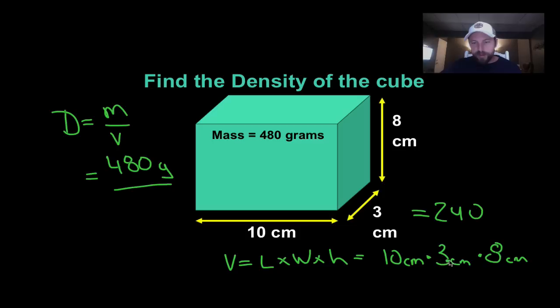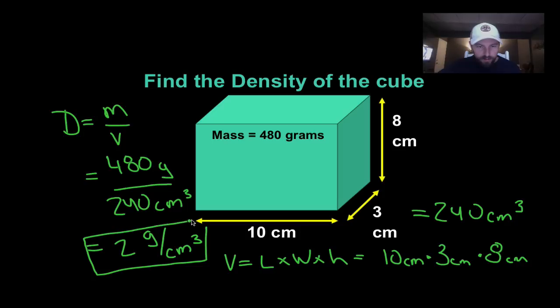And it's centimeters times centimeters. So that's centimeters cubed. Put that on the bottom. 240 centimeters cubed. And so then 480 divided by 240 is 2 grams per centimeter cubed. That is your answer. That's it. Very simple, very basic density problem.